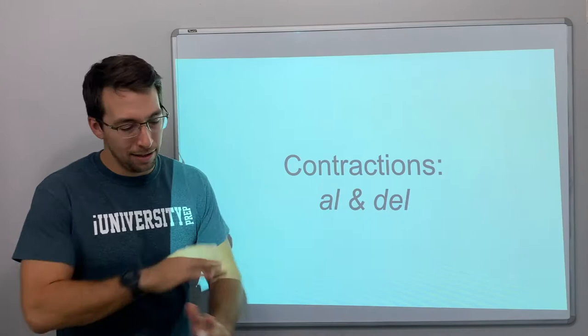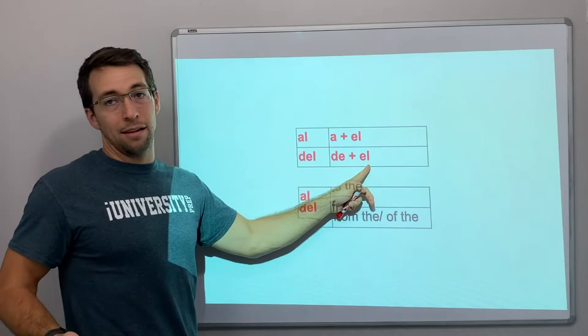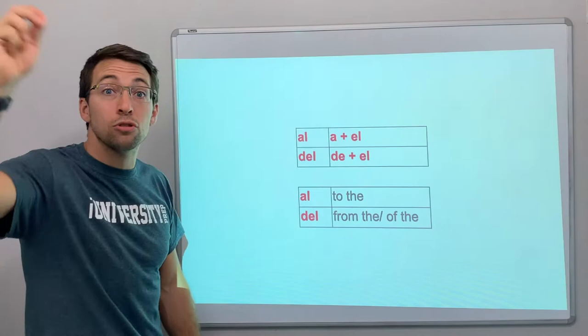Al is just a contraction, the combination of a and el. Del is de plus el. Al means 'to the' — let's go al cine, let's go to the theater. Or, we're coming del parque, we're coming from the park.